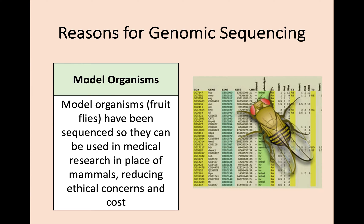The third use of genomic sequencing is the use of model organisms for research. A model organism is a species which has been widely studied and is easy to breed and maintain in a laboratory setting. If we know the entire genome of a model organism, then we can study the effect of different mutations on its genome. We can do this instead of using mammals, and this reduces both the cost of research and removes a lot of the ethical concerns that come with research.